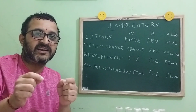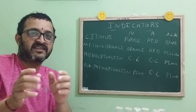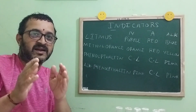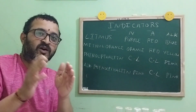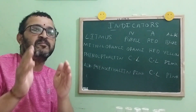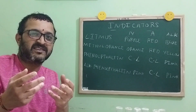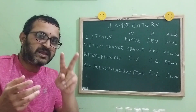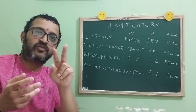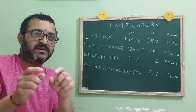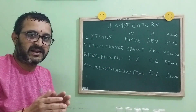So, what are indicators? Indicators are the weak organic acids or bases which change color according to the pH values. For any compound to behave as an indicator, it must produce a minimum of two colors — one in acid medium and another in alkaline medium.